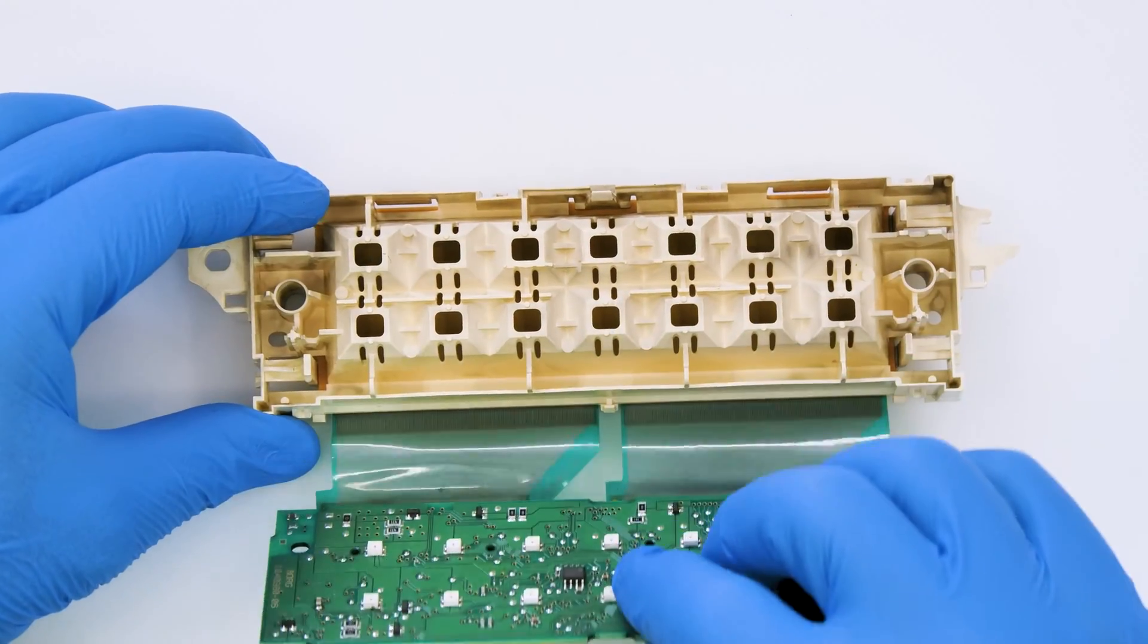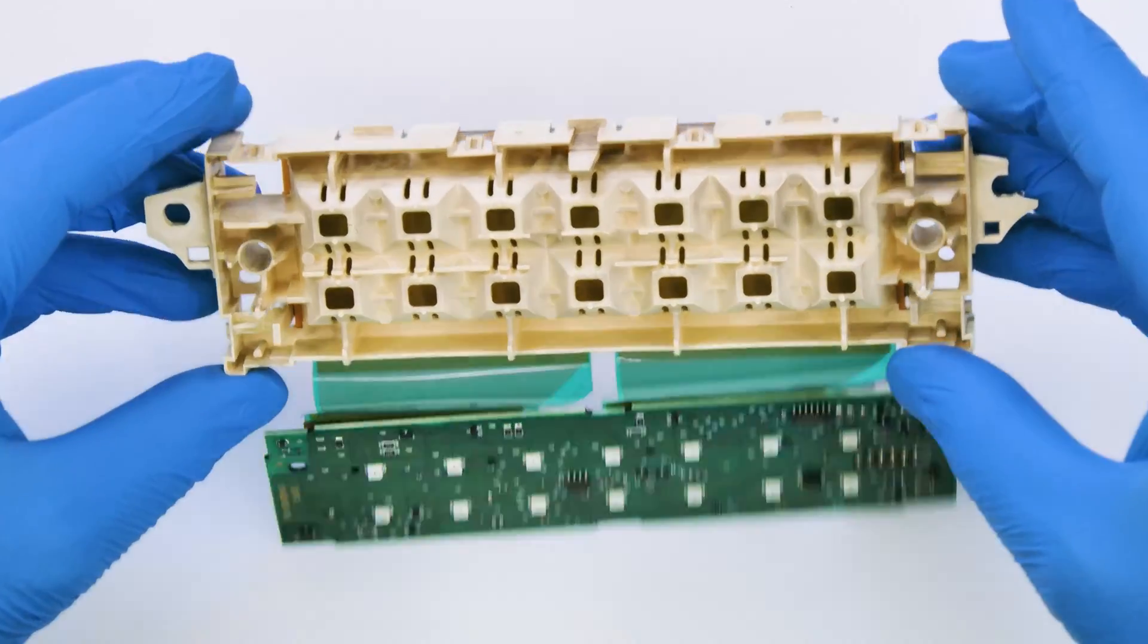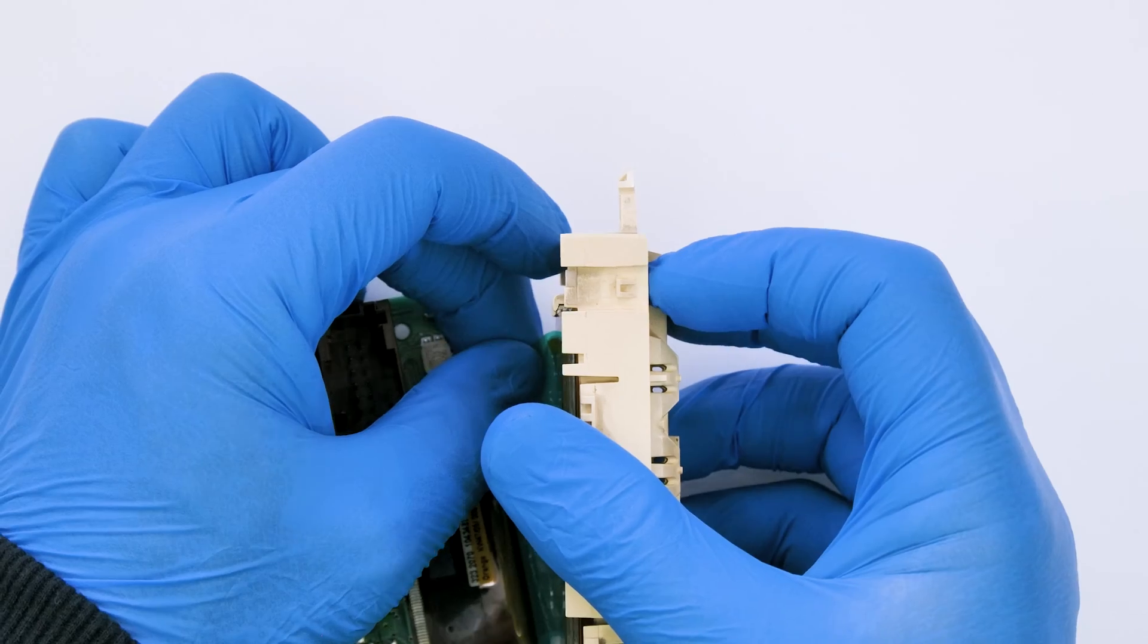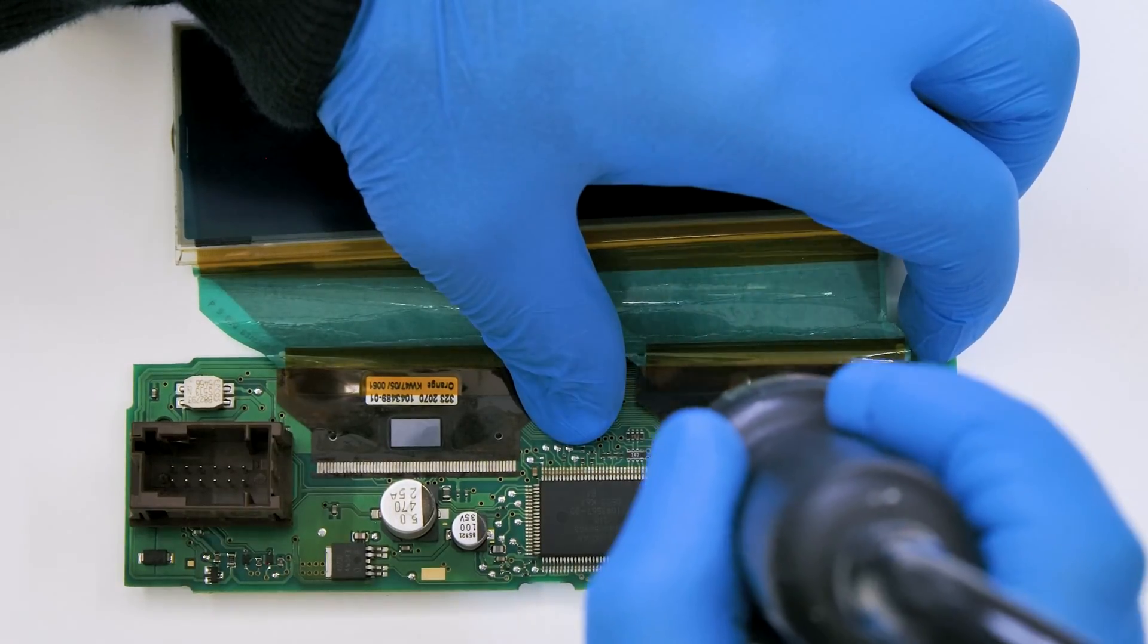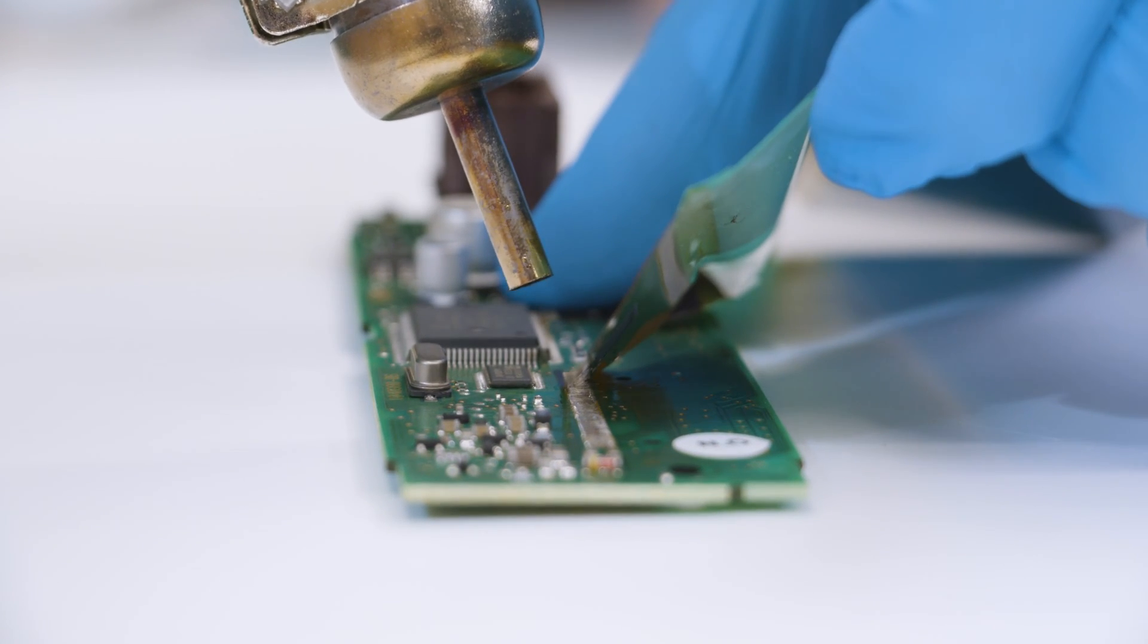Undo the PCB and release the display from its base. With the hot air desoldering iron desolder both FPCs.